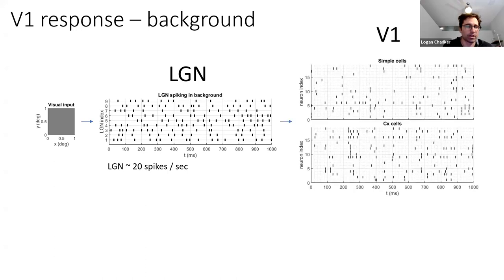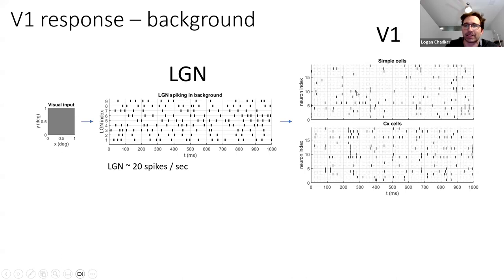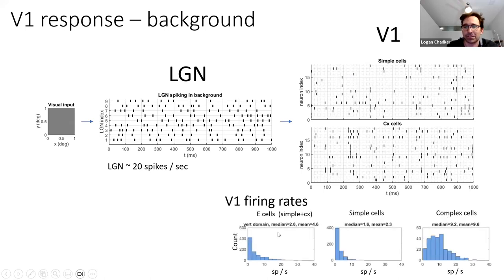Here are example rasters showing what V1's response looks like. There are two different kinds of V1 cells called simple and complex cells. The main thing to point out is that V1 is spiking in background and there's a lot of variability in the firing rate — if you look at these different neurons, they behave very differently from each other, in contrast to LGN where everything is about the same. If you pull up the firing rate distributions in background, you can see that V1's firing rate varies from zero up to even 20 spikes per second. So the cortex is not just following whatever LGN is doing.